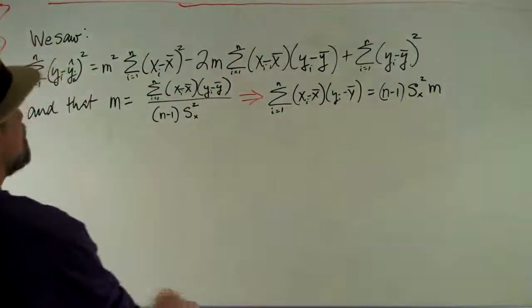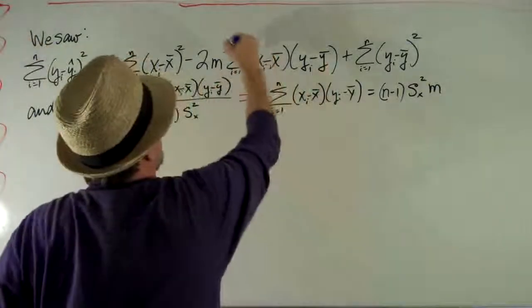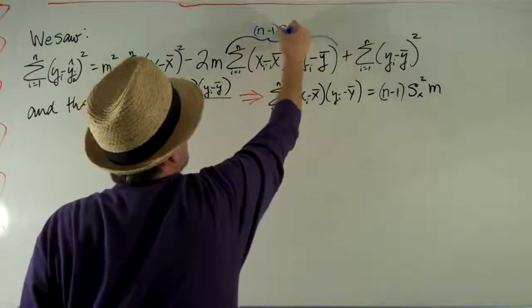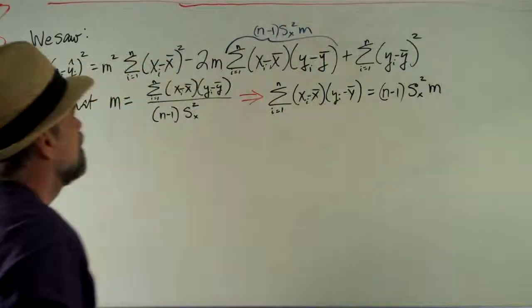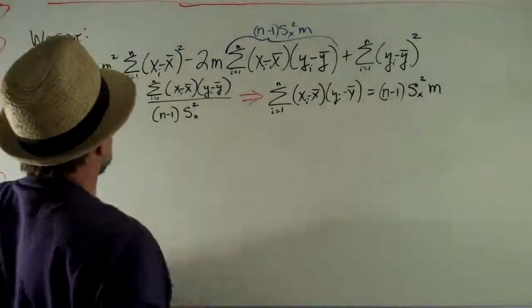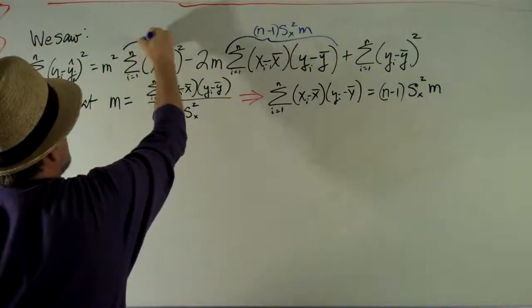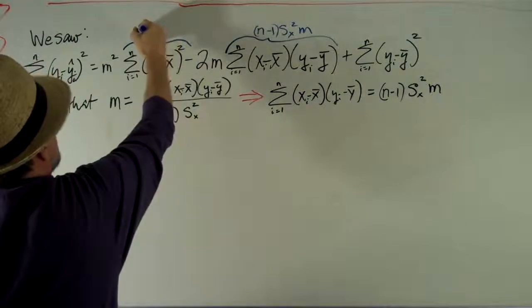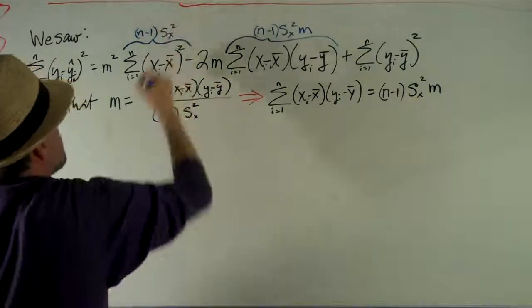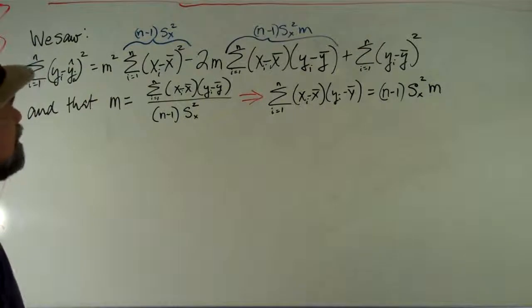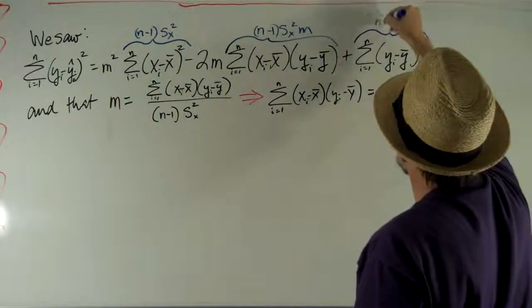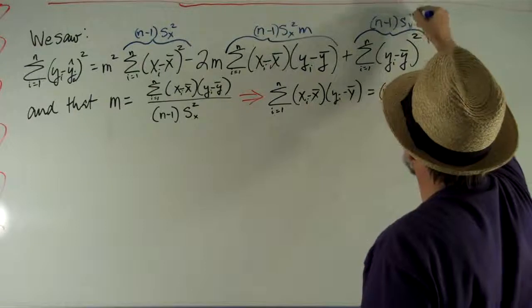So, what I'm going to do is I'm going to say, let's just take this and rename it n minus 1 times the variance of x times m. And while we're at it, can we call this, I know what that is. Because this is just n minus 1 times the variance of x, right? And shoot, while we're at it, isn't this thing just n minus 1 times the variance of y?